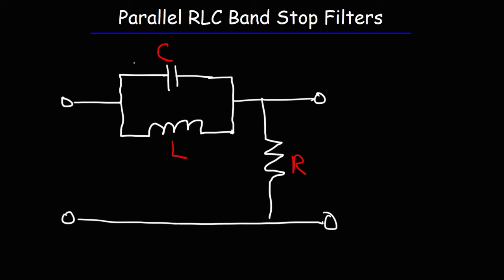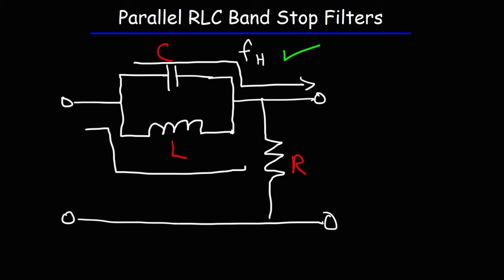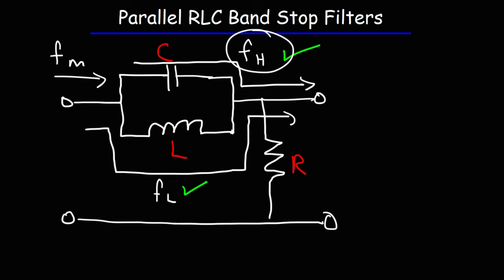High-level frequencies will pass right through the capacitor — the capacitor is highly conductive to high-level frequencies, so they will make it through to the output. The low-level frequencies will pass right through the inductor and will also make it to the output. The mid-level frequencies are the ones that are going to have the highest impedance, because they can't effectively travel through the capacitor or the inductor. The mid-level frequencies can't flow through the capacitor as well as the high-level frequencies, and they can't flow through the inductor as well as the low-level frequencies. So this circuit provides the greatest impedance to the mid-level frequencies, and thus they will have the lowest output voltage.